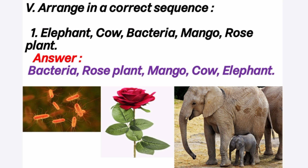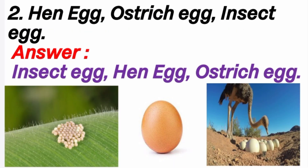Bacteria is a microorganism, then rose plant, then mango, then cow, then elephant. Second question: hen egg, ostrich egg, insect egg. Answer: first, insect egg; second, hen egg; third, ostrich egg. Because the hen egg is larger than the insect egg, and the ostrich egg is the largest of all three.